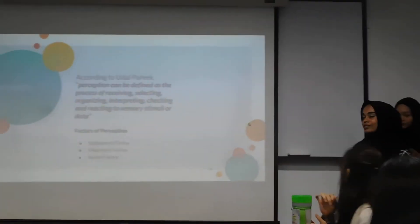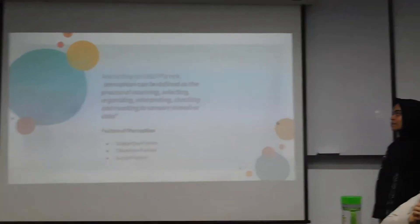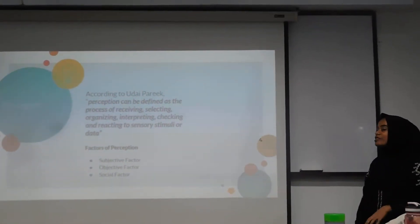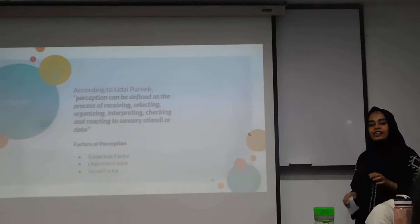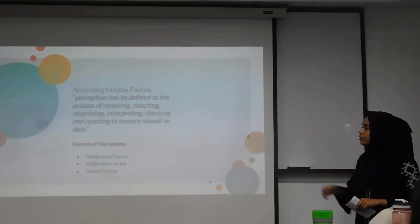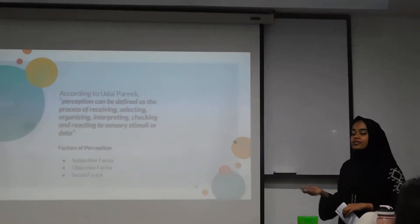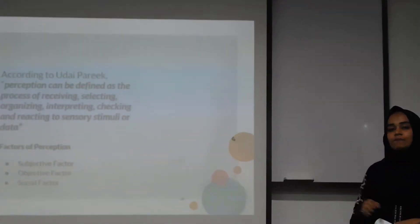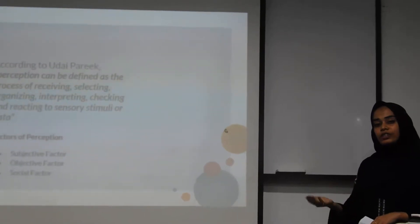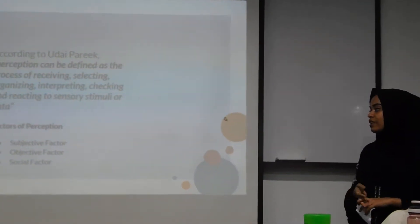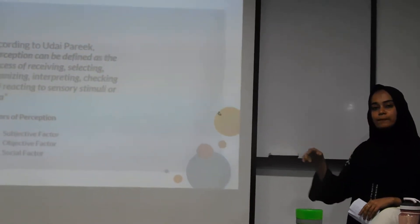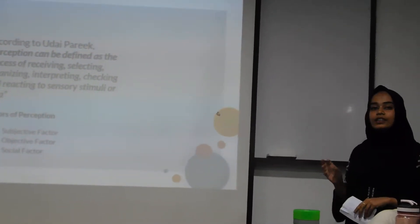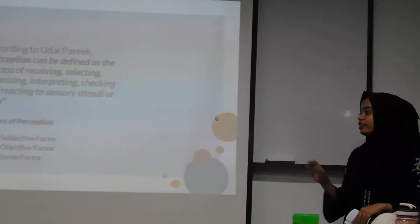Next, I'm going to talk about perception. Perception is a process by which sensory information is organized and integrated by the brain. There are three factors of perception. Subjective factors are related to a person's own self — for example, fitness, past experience, knowledge, and mental capacity. Objective factors can be found in the physical environment, also known as stimuli. Social factors are related to the interests and needs of a group in a society to which an individual belongs.